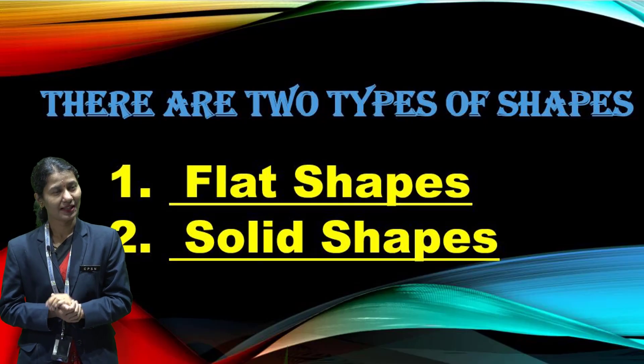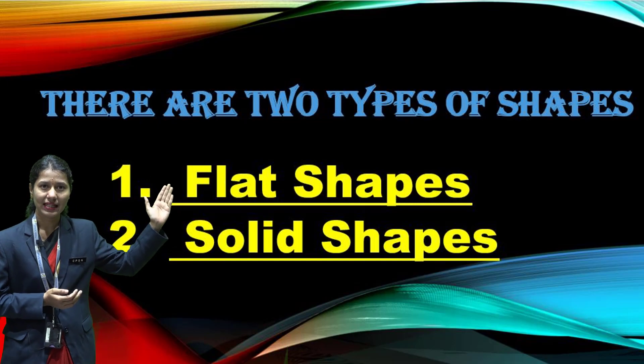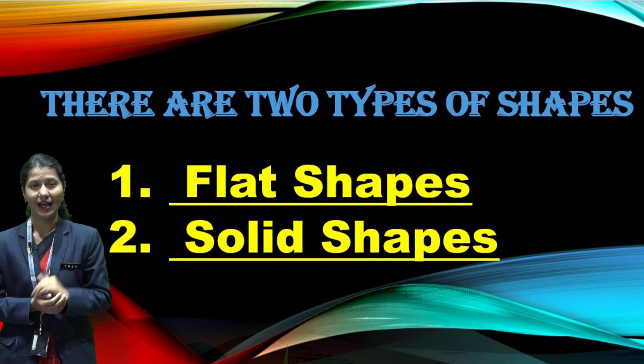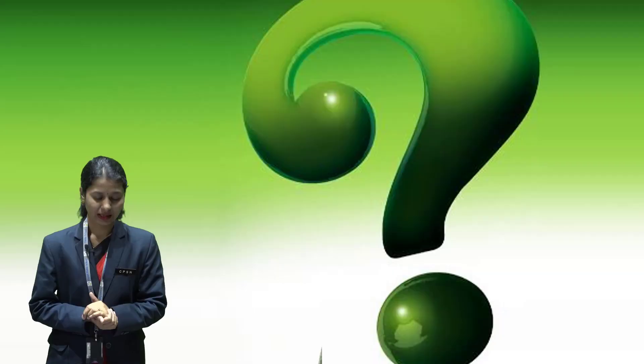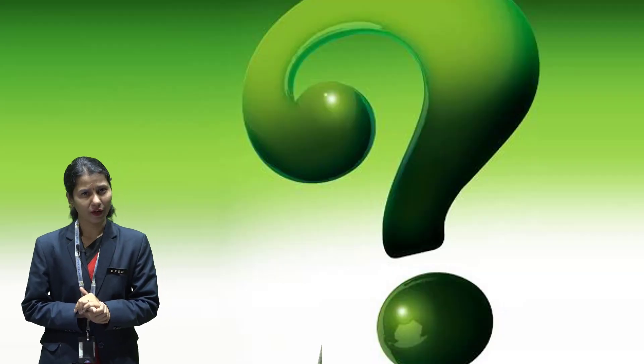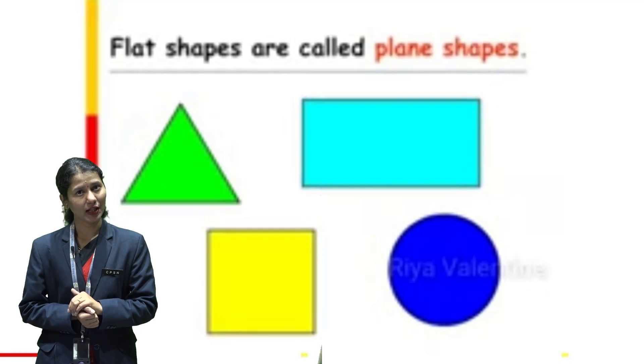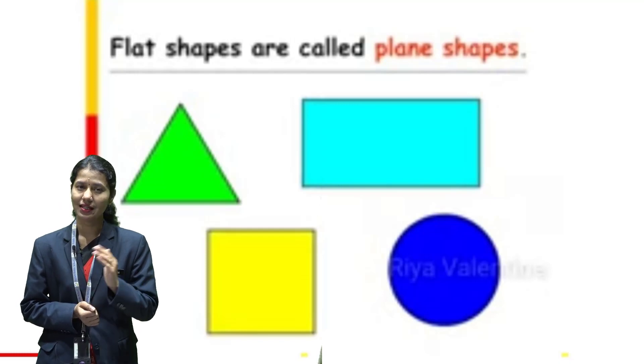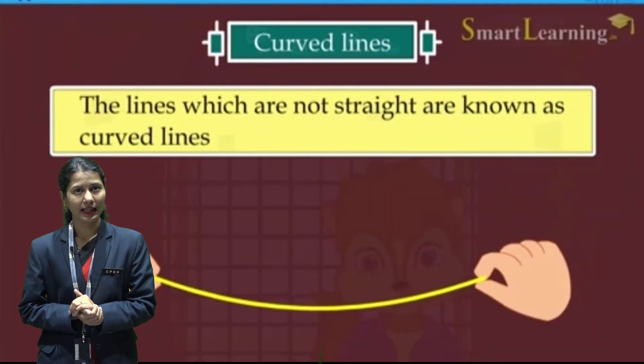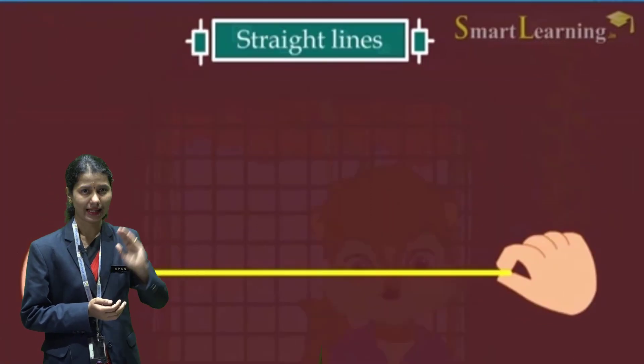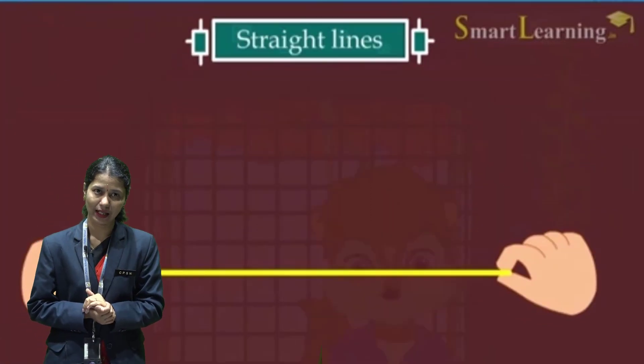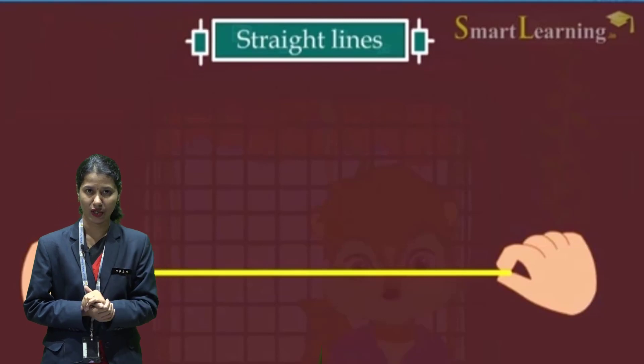There are two types of shapes. First one is flat shape, it's called plain shape. And second, solid shape. Do you remember, students, what flat shapes are? Yes, flat shapes are those that can be drawn on a flat surface such as a paper and they are formed by curved line and straight line. Now, let's learn about their sides and corners.